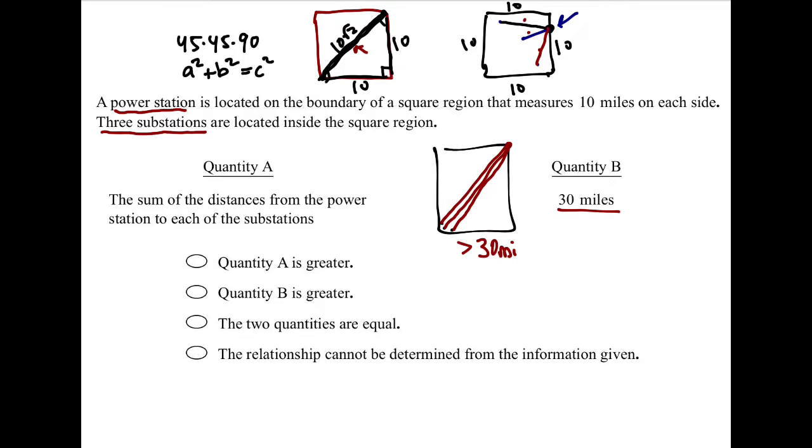So in that case, I'd say quantity A is larger than quantity B. But because there's no guarantee that those substations are here, meaning I could put those substations up here, and then obviously these blue lines or the sum of the distances of those blue lines would be much shorter. So for that reason, the relationship cannot be determined from the information given.